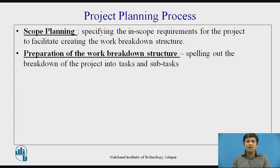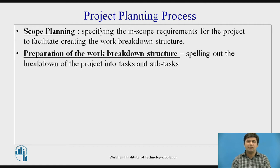Preparation of the work breakdown structure involves spelling out the breakdown of the project into tasks and subtasks. For example, if we need to build a road of six kilometers, we break it down into the first kilometer, second kilometer, and so on. Within the first kilometer, we further break it down into 100-meter sections, then the second hundred meters, and so on. Each section must be clearly defined and assigned to someone. Preparation of the work breakdown structure is far, far important in the project planning process.